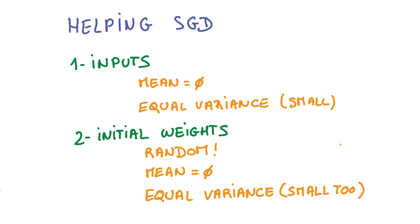You've already seen some of these tricks. I asked you to make your inputs zero mean and equal variance earlier. It's very important for SGD.